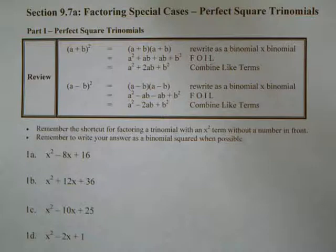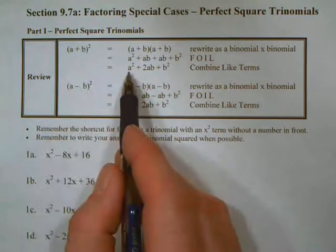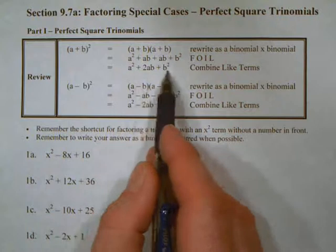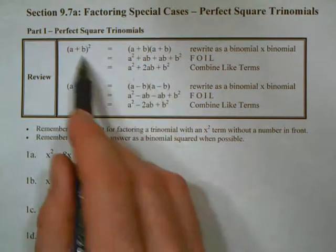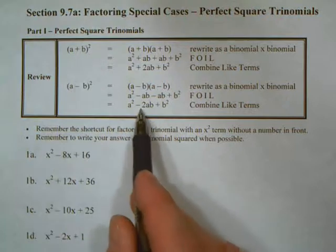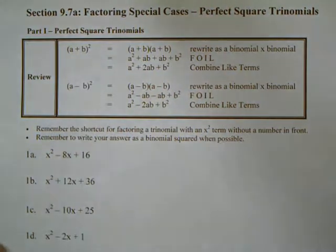Our shortcuts today come back to foiling when we had a plus b, the quantity squared. If you remember, it was the first one squared, the last one squared, and double the middle two. The middle follows the sign of what's in the parentheses. So here we have minus 2ab in a minus b squared.